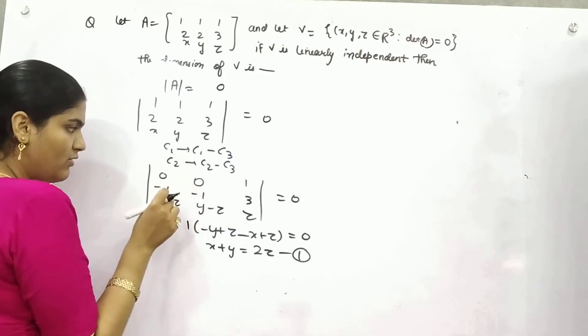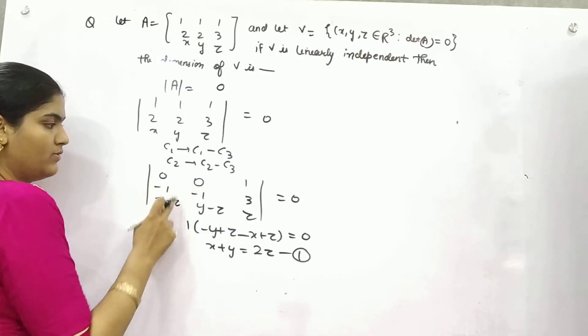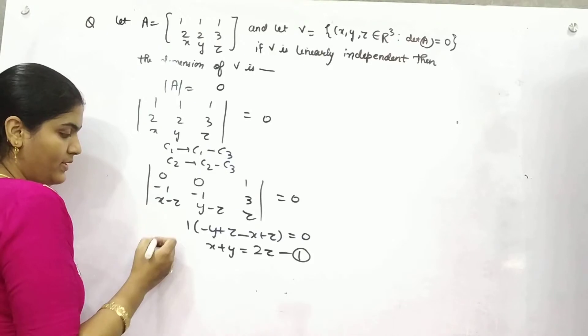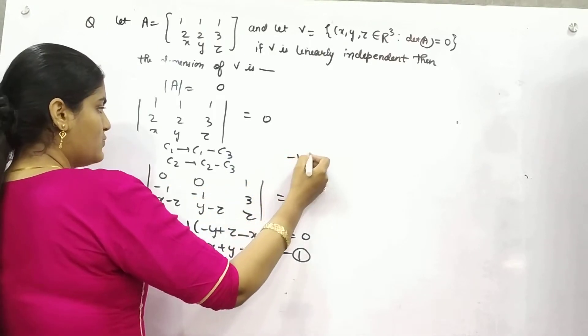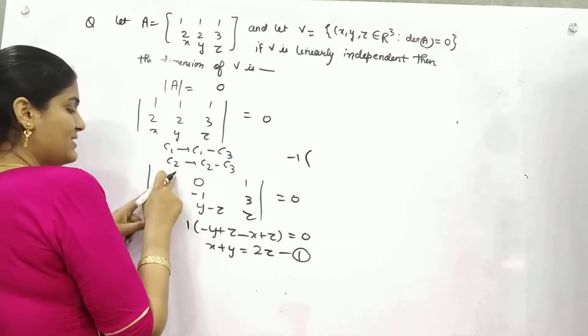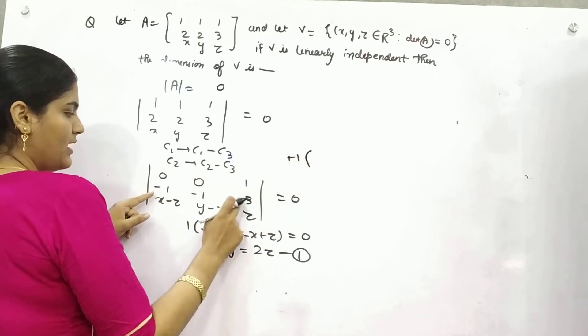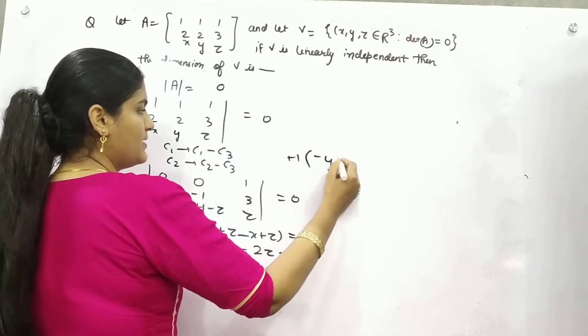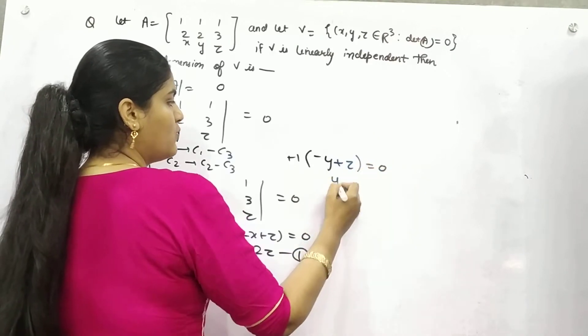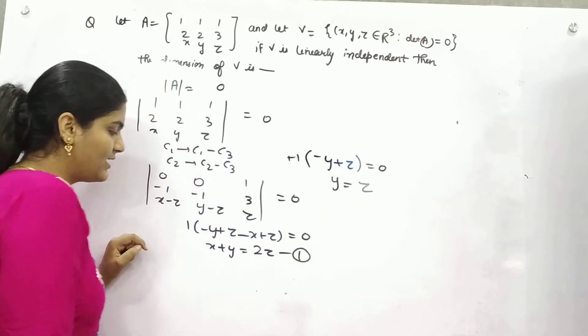Or if you solve it from here, what will you get? From row 1, this is plus minus, so plus 1, and thereafter minus y plus z equals zero. So y equals z.